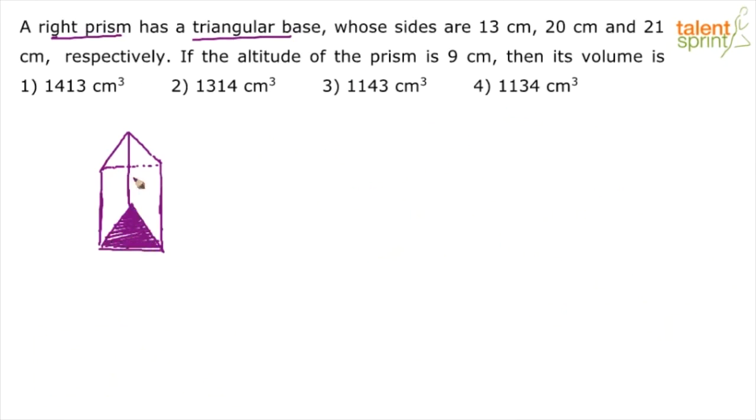If you consider this as the base then what goes vertically upwards of the prism here? Now we have been given the sides of this triangular base. The sides are 13, 20 and 21 centimeters. So this is a scalene triangle. All the three sides are different. So let's say this is 13, this is 20 here and 21.